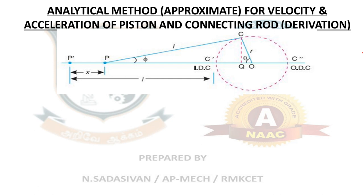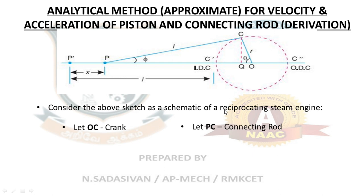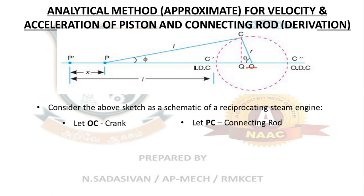Let us consider a reciprocating steam engine represented by a line sketch. This dot represents the piston, which is moving from one point to another. The blue straight line represents the connecting rod. The small blue line from O to C is called the crank, and from P to C is your connecting rod. The dot is your piston — initially it was here, now it is here.